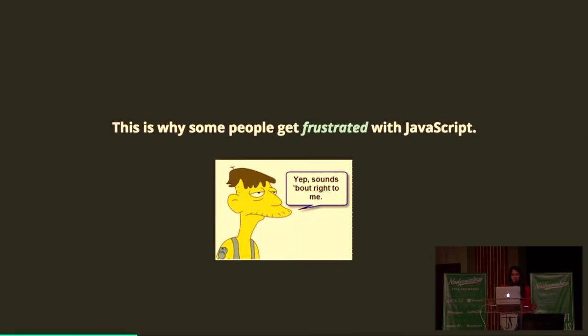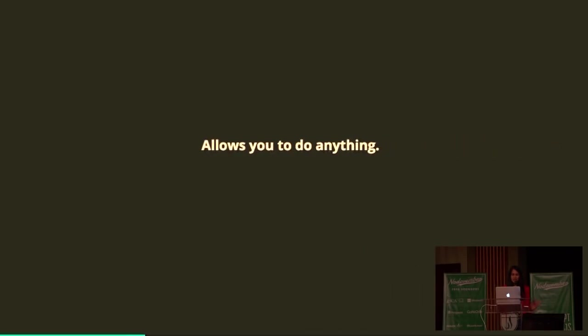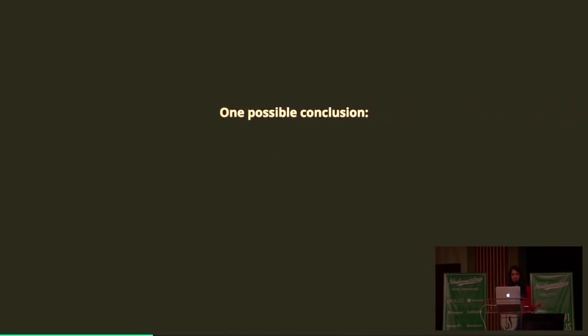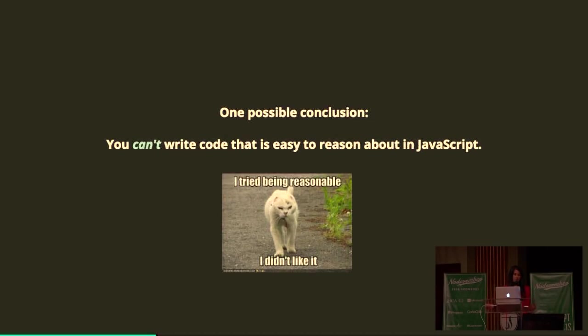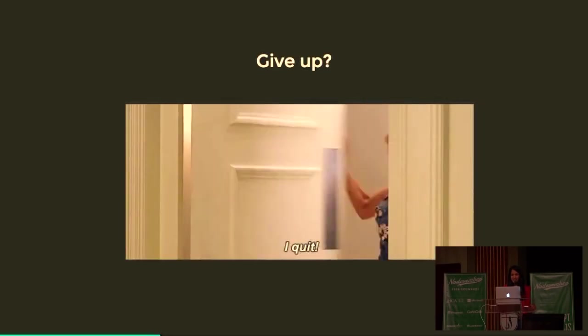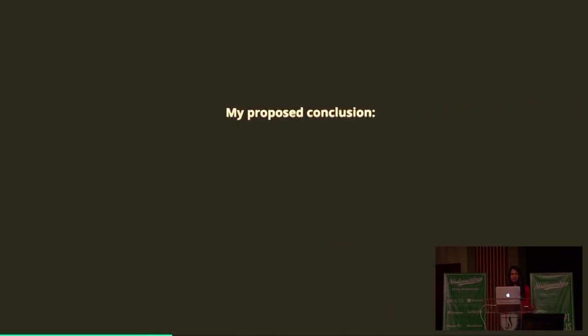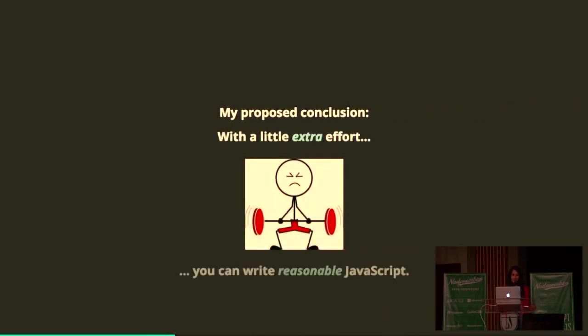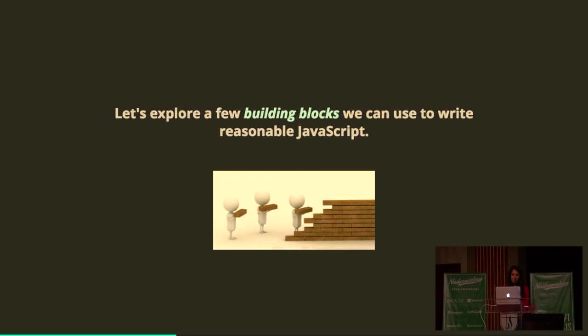This is why some people get frustrated with JavaScript — there's no compile-time restrictions; it allows you to do a lot, but you will do anything. One possible conclusion: you can't write code that's easy to reason about in JavaScript. So then we give up? Definitely not. My proposed conclusion is: with a little bit of extra effort, you can write reasonable JavaScript. For the rest of this talk, I'm going to talk about a few of many building blocks we can use to write reasonable JavaScript.